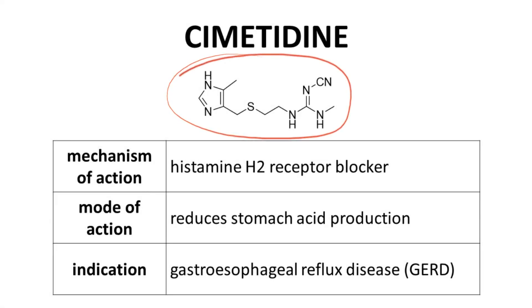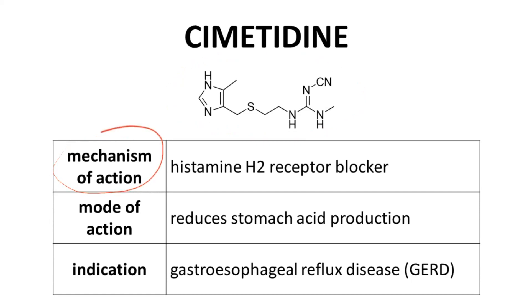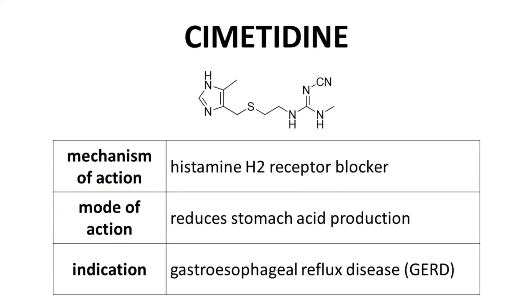Here is the structure of cimetidine. The mechanism of action of cimetidine is as a histamine H2 receptor antagonist — cimetidine blocks the action of its target. The outcome of this mechanism is the mode of action, and cimetidine causes a reduction in stomach acid production.